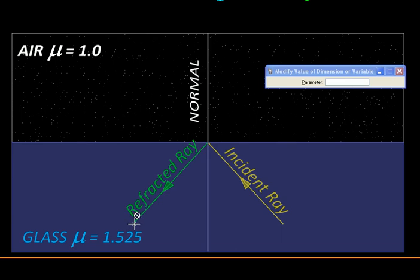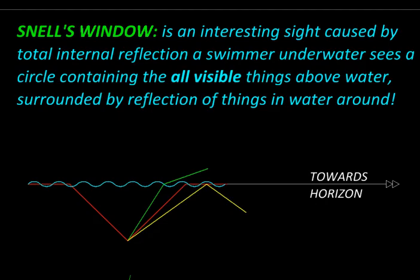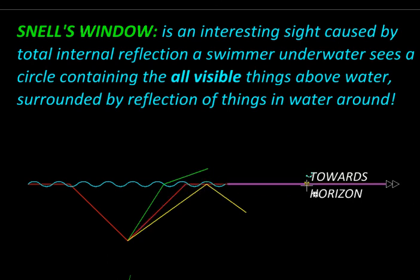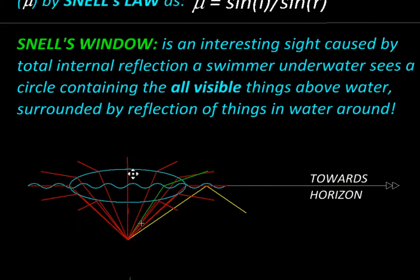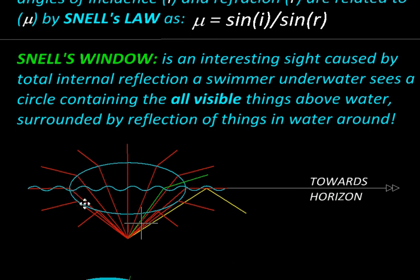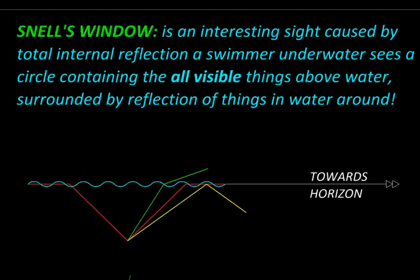Total internal reflection sometimes gives an interesting phenomenon called Snell's window. Someone swimming underwater when looks up sees things outside in the air, but some rays going towards the horizon would be showing reflection of things in water. In fact, this is a three-dimensional phenomenon — if we rotate this, it is actually a circle within which the entire world outside is seen, and around that you will see fish swimming underwater, upside down.